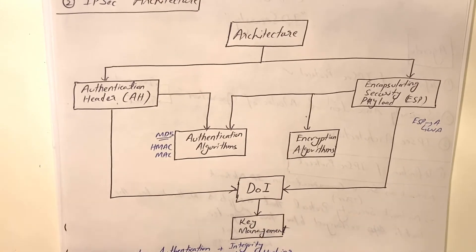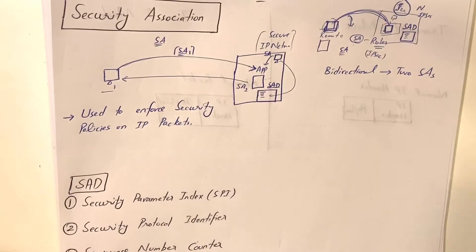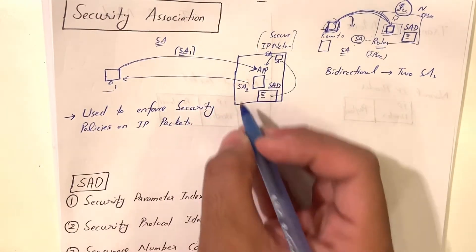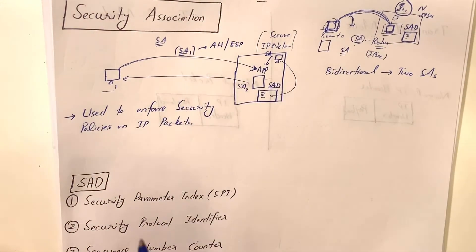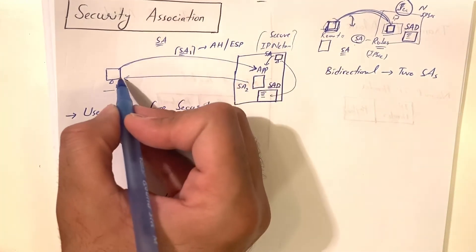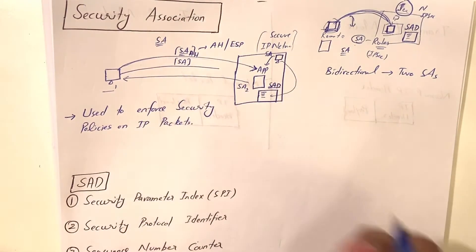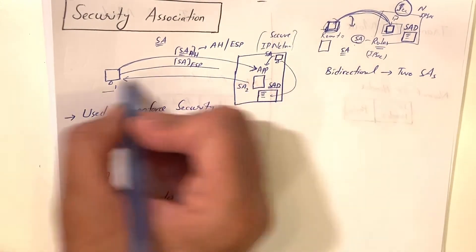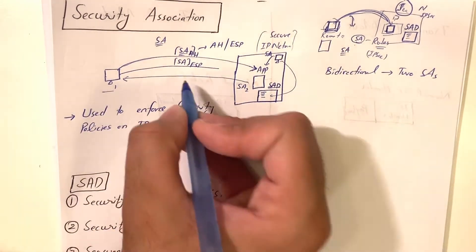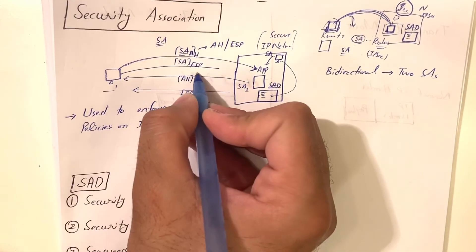In IPsec, there are two services — Authentication Header and ESP for confidentiality. One security association can only provide one service at a time: either Authentication Header or ESP. If you want both AH and ESP, the client requires two security associations.